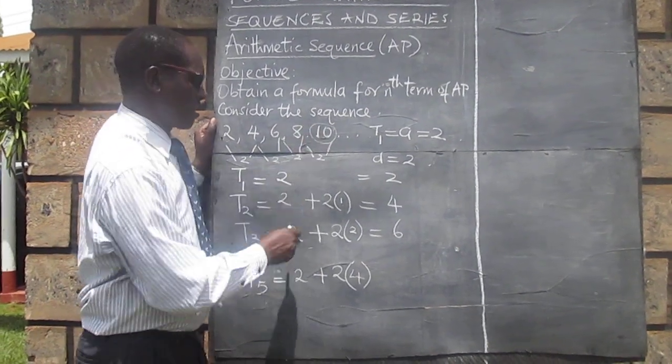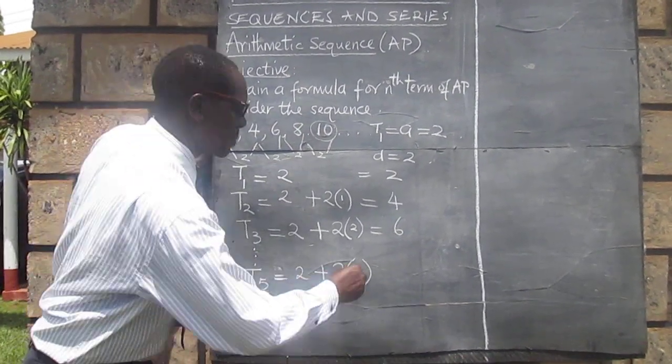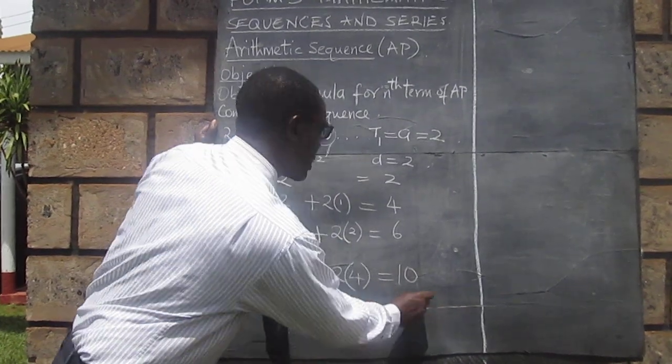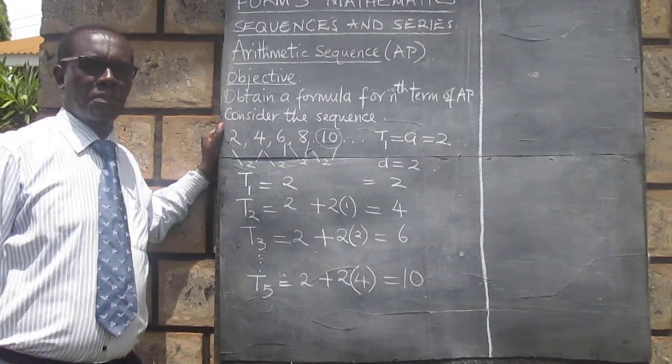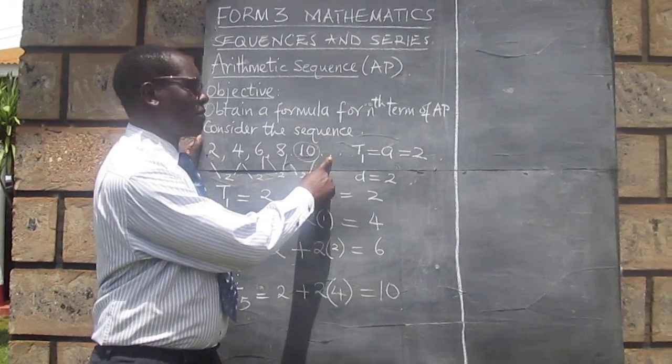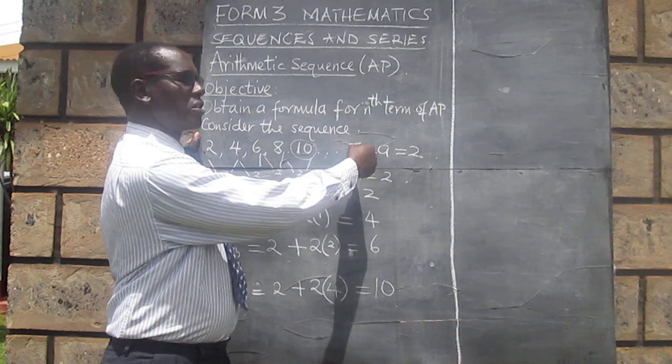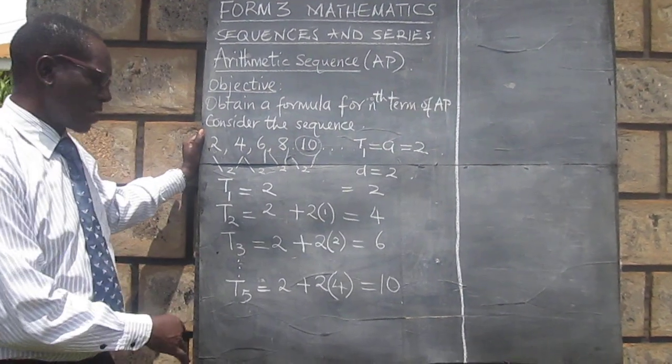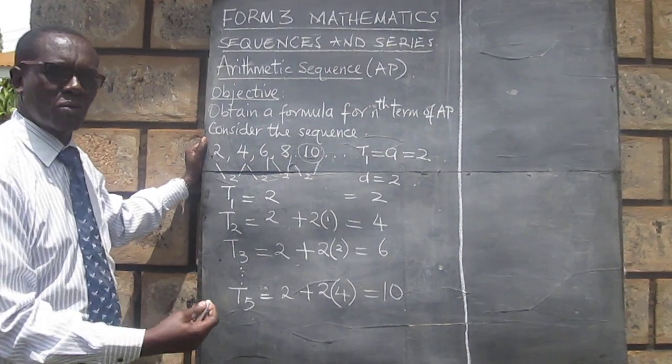Is that what we are getting from our observation? And clearly, it's what we are getting. Maybe we can go on here. The next term, the sixth term will be 12. The seventh term will be 14. Let's see whether the same pattern can give us what we are expecting.